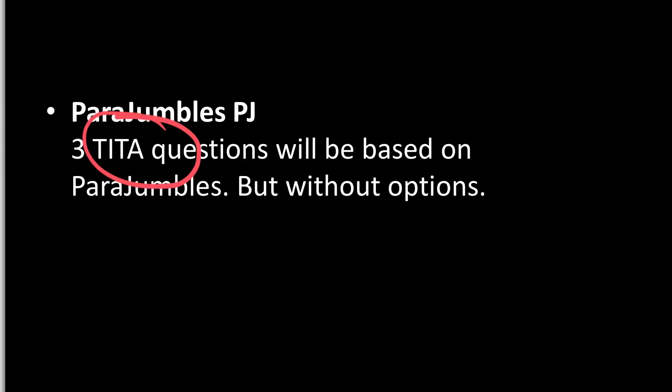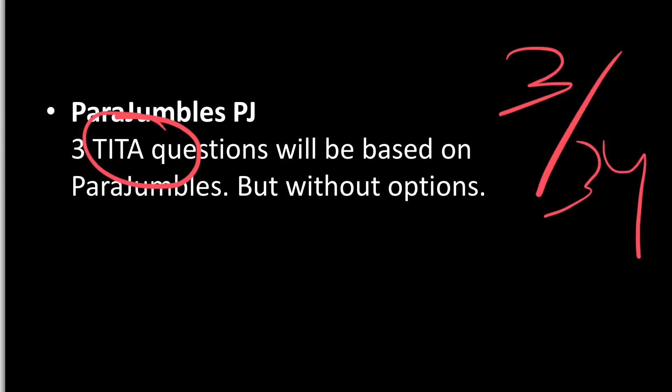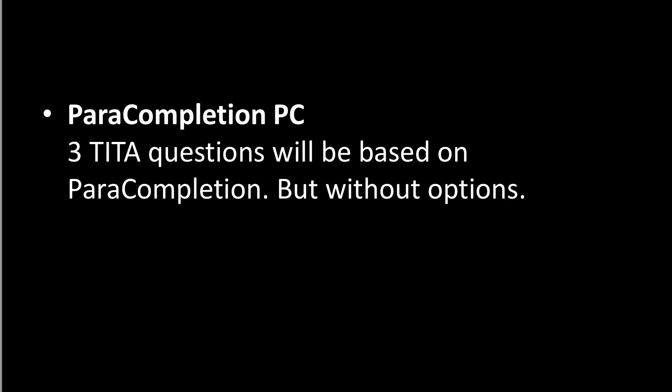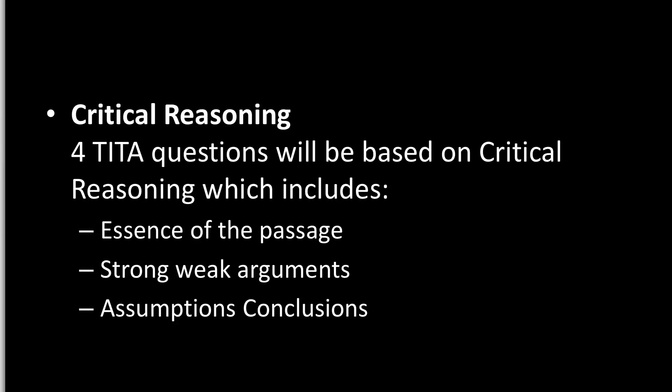Para Jumble: three questions will be based on para jumbles, which means without options — you are going to have to tackle these. Three questions out of 34 will be para jumbles. Para Completion: three questions out of the ten non-RC questions will be para completion, where the last line is missing and you have to complete it.